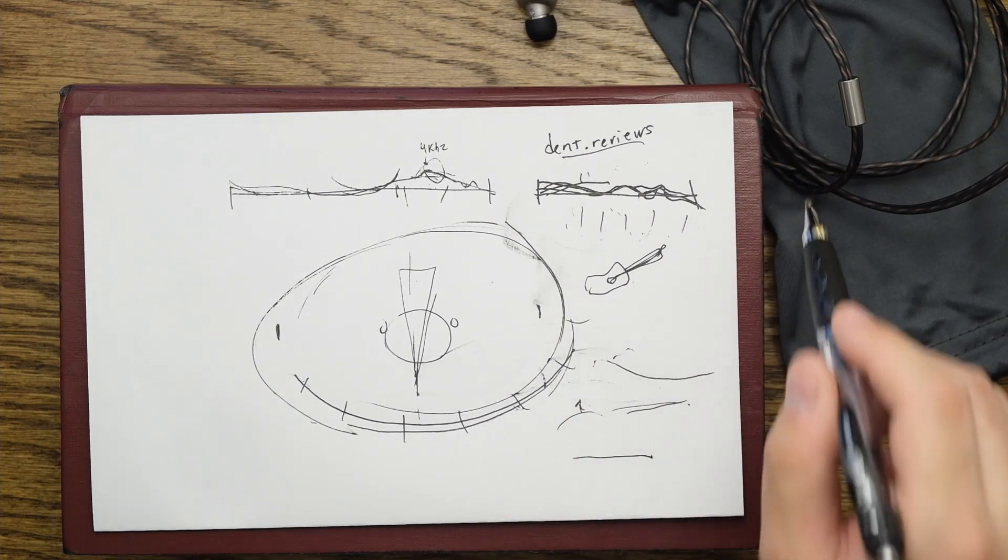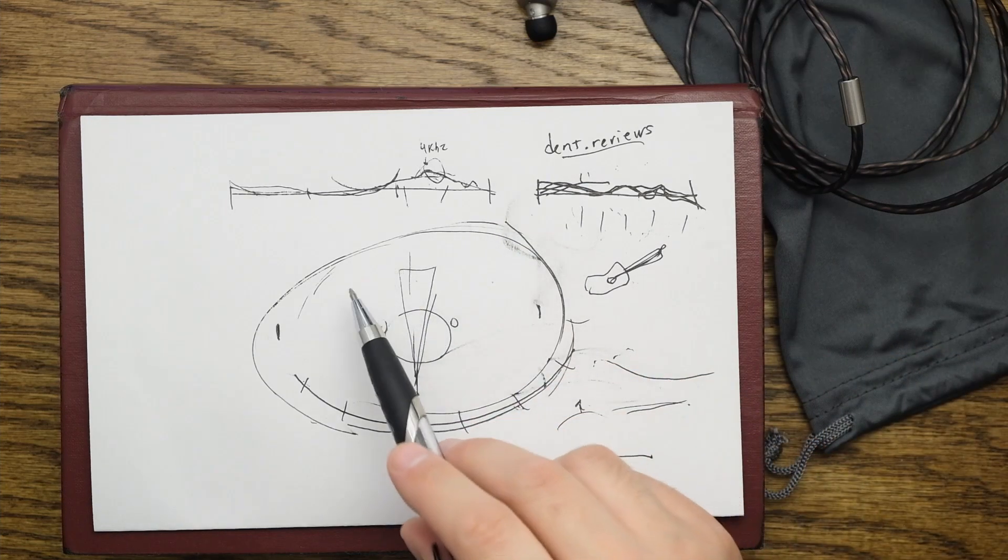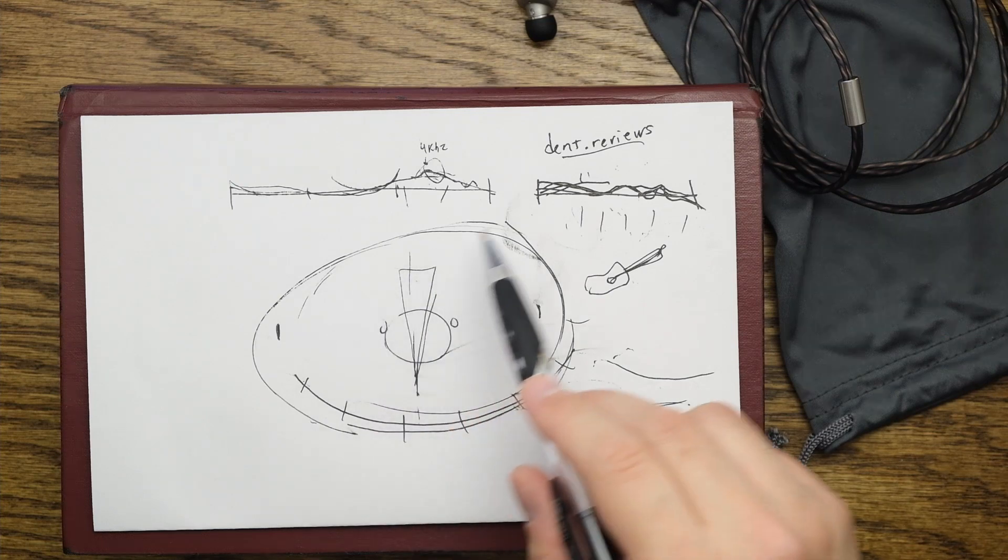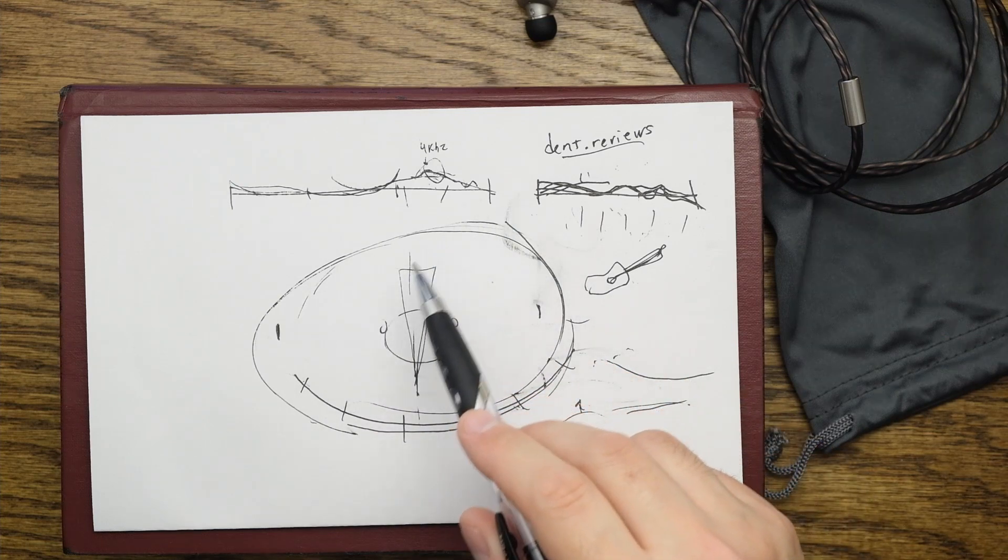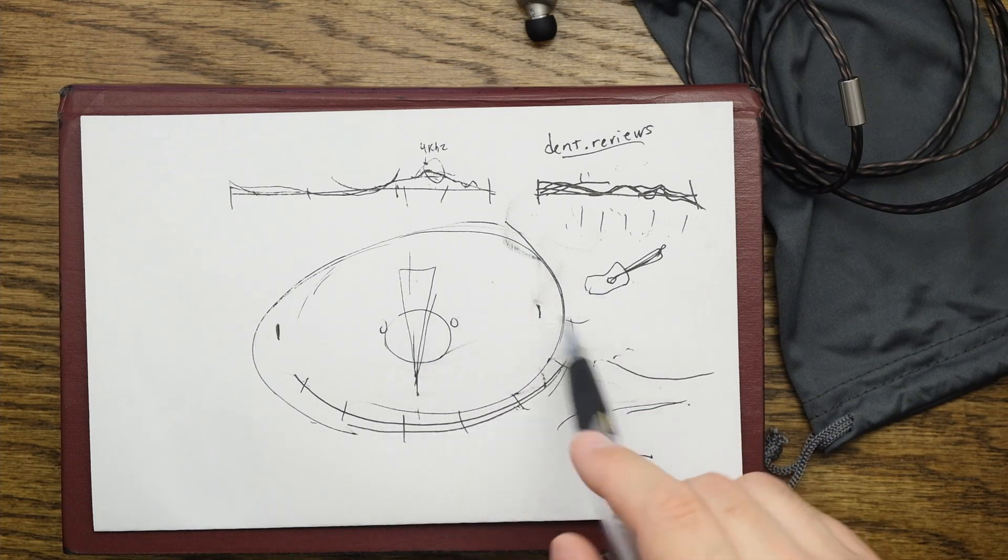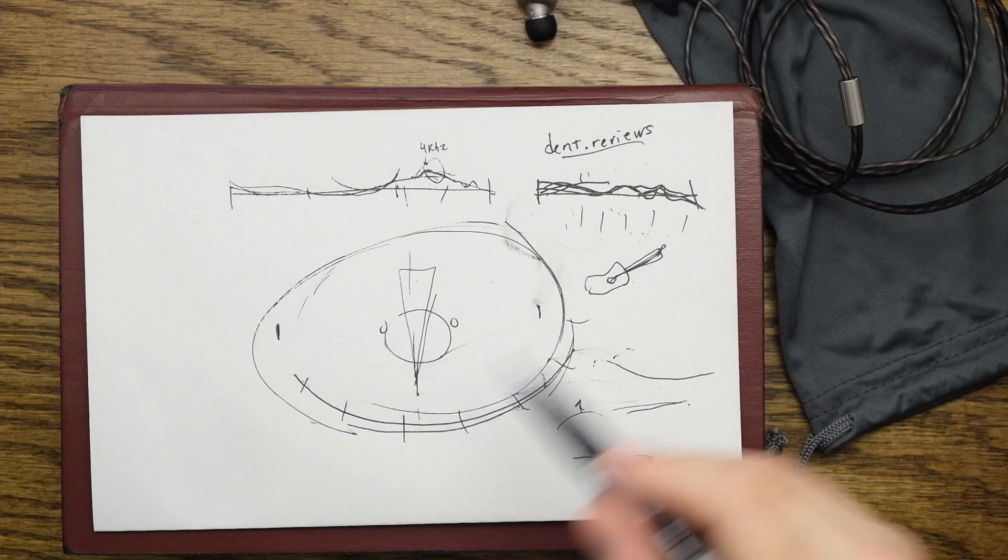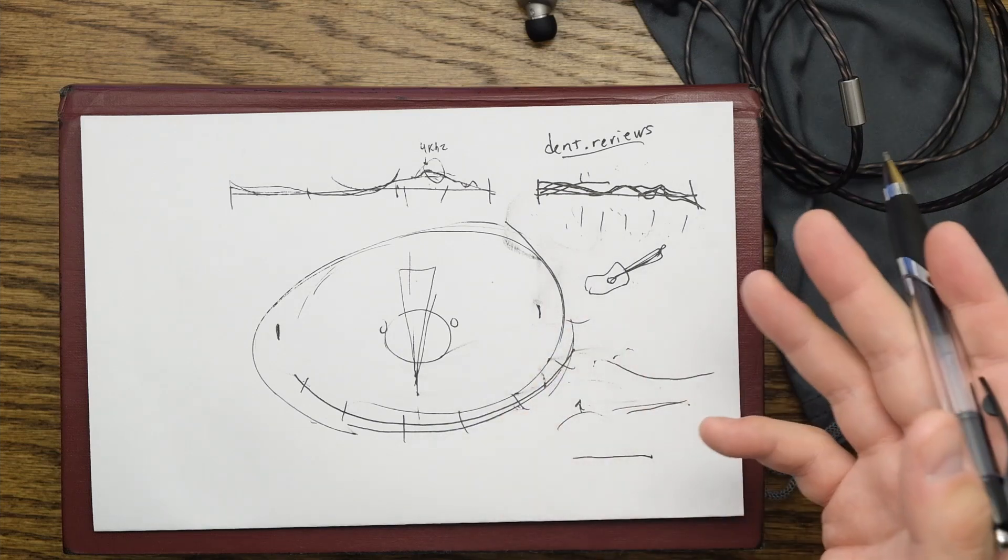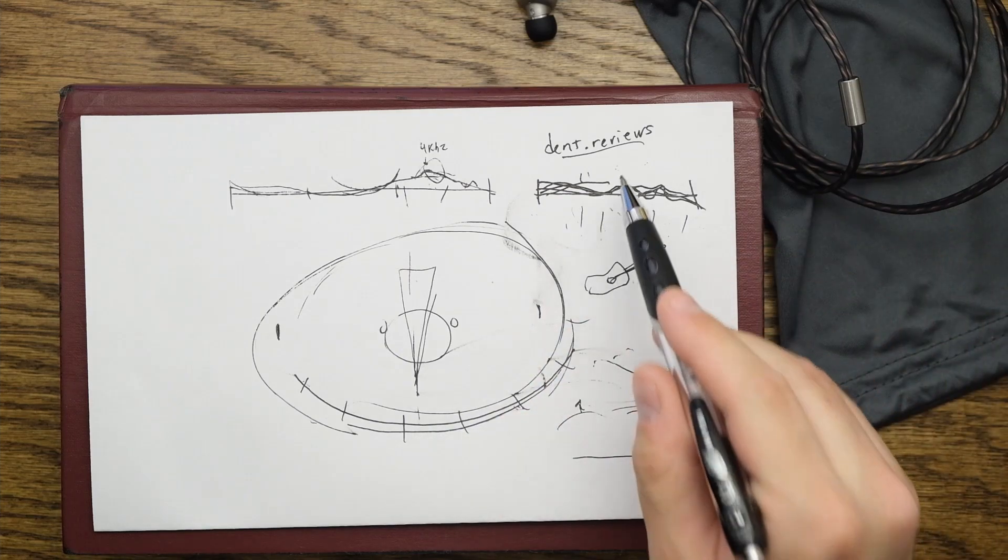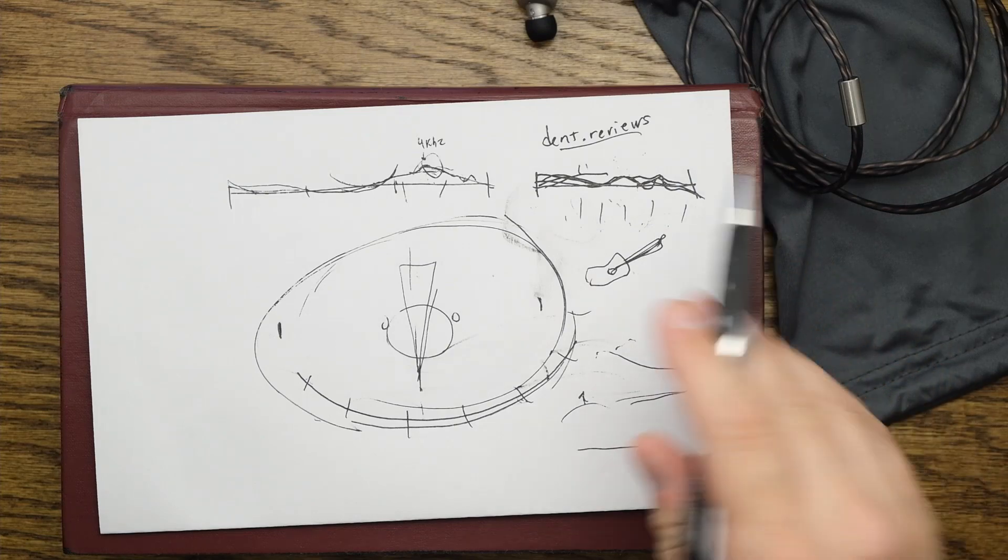I don't want to say this is a horrible earphone with horrible quality control. I don't have enough sample units to say that, unfortunately. But in my experience, these three sets I've had alone are by far more varied than other earphones that I've measured, such as the Etymotics or the Moondrops. The Moondrops measure phenomenally well. Again, there's not a lot of sample size, but Mark over at Super Review and I compared our illuminations, and they looked identical.